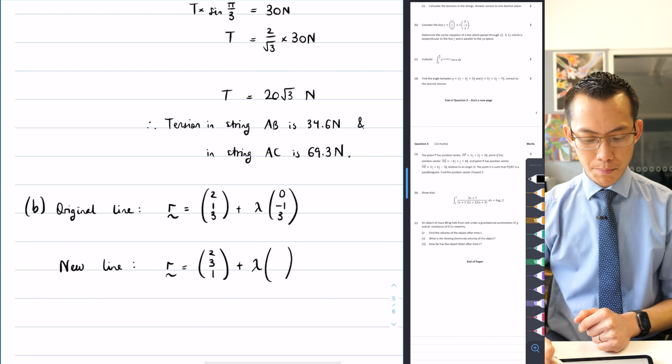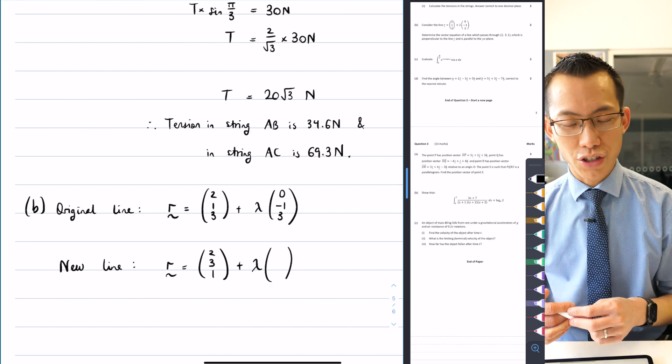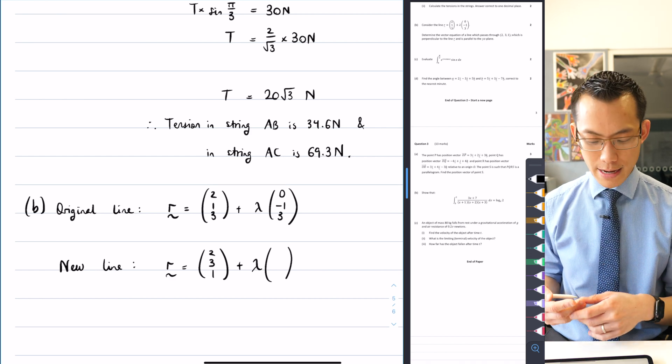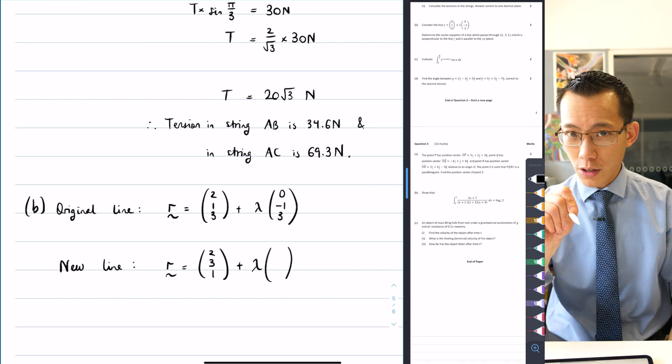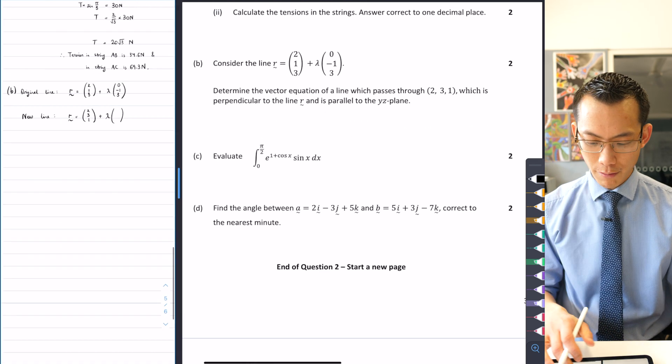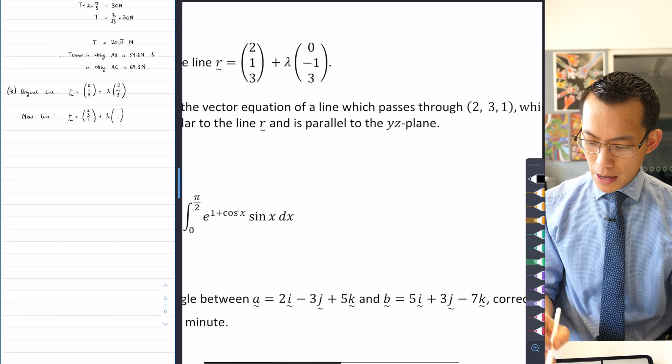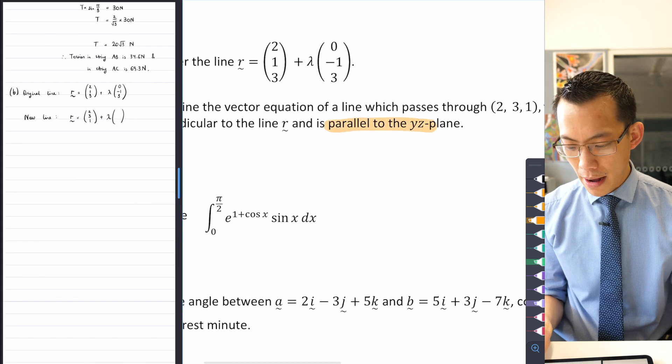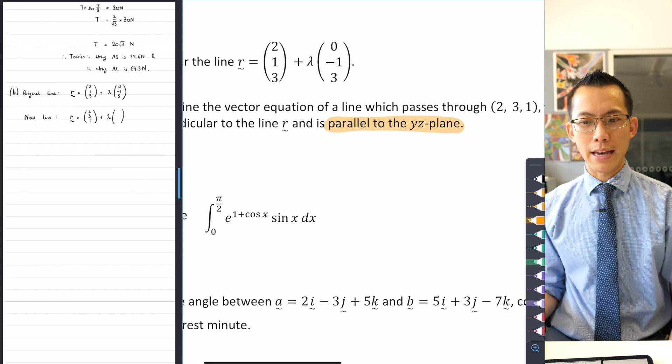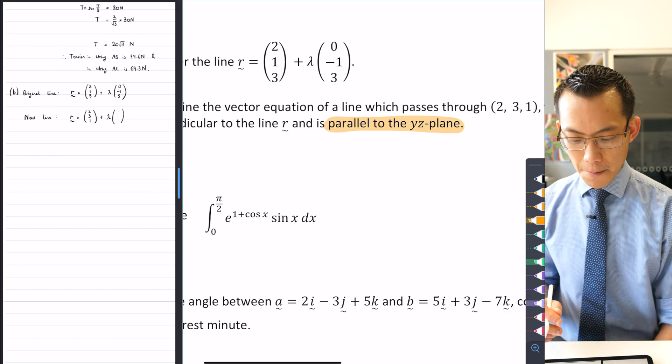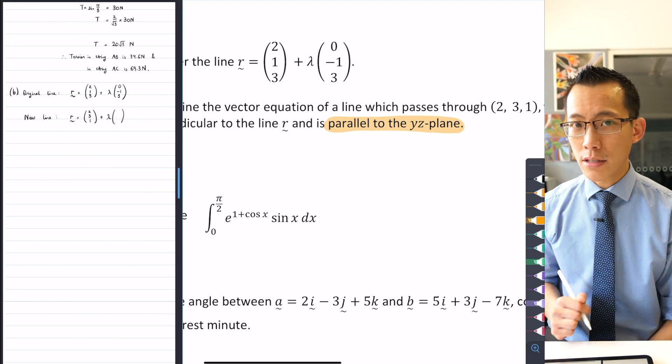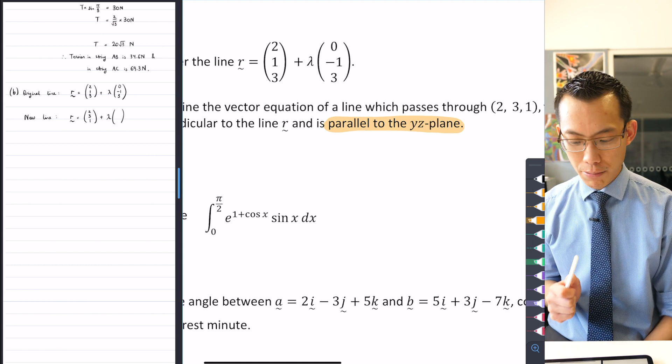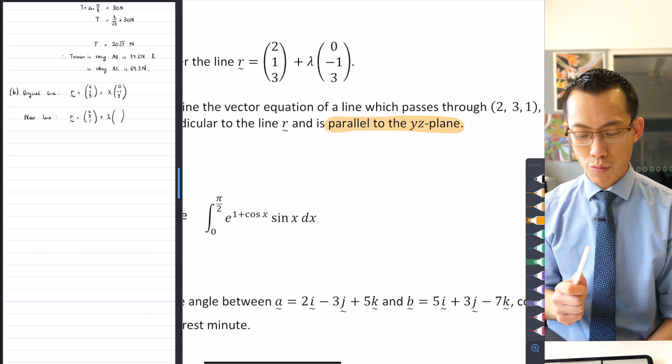Now, normally I would say, oh, let's just pick some arbitrary coefficients here, pop them in, and see what happens. Like I could call them A, B, and C. However, if I look back at the question, and this piece of information that everyone sort of missed a little bit, if you have a look and see that this is parallel to the YZ plane, parallel to the YZ plane, what that means is the X component has to be 0.